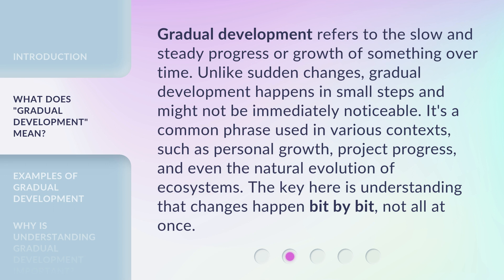Gradual development refers to the slow and steady progress or growth of something over time. Unlike sudden changes, gradual development happens in small steps and might not be immediately noticeable. It's a common phrase used in various contexts, such as personal growth, project progress, and even the natural evolution of ecosystems. The key here is understanding that changes happen bit by bit — not all at once.